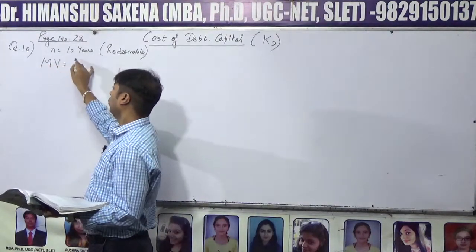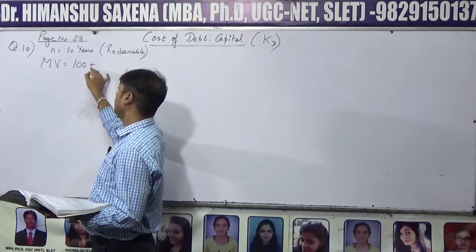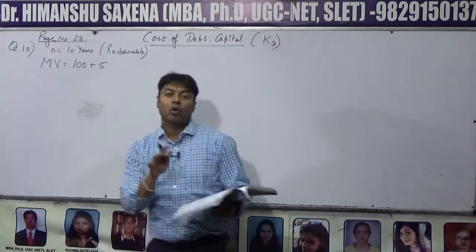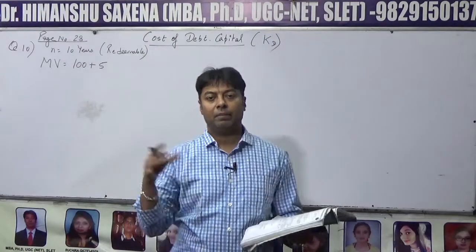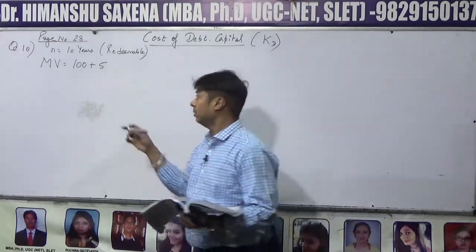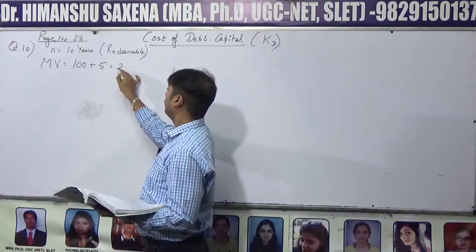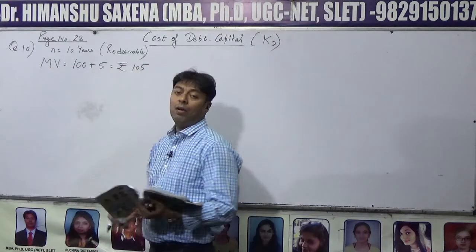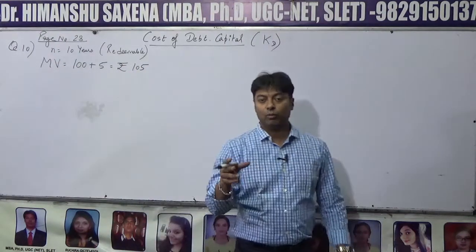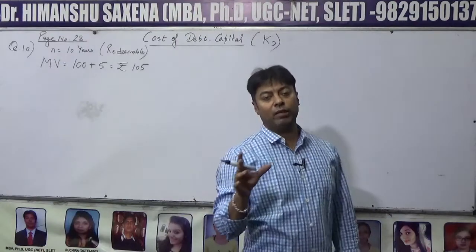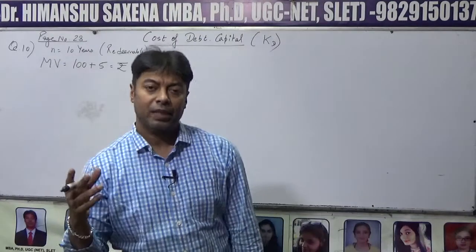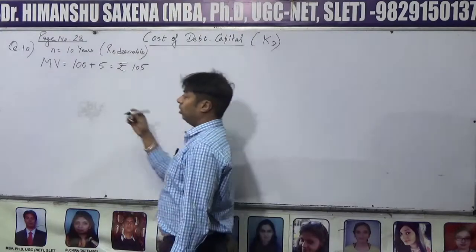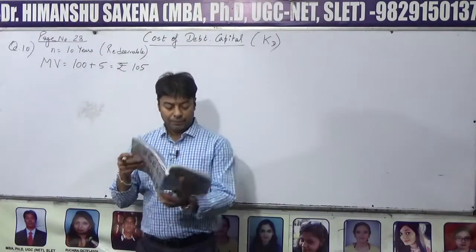तो maturity value (MV) होगी: ₹100 + 5% of ₹100 = ₹100 + ₹5 = ₹105. इस question में maturity value = ₹105. Generally जो face value होती है वही maturity value बन जाती है, लेकिन इस particular case में premium है।